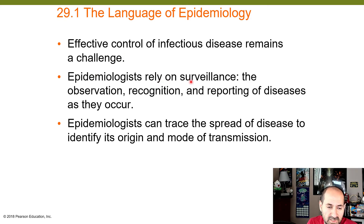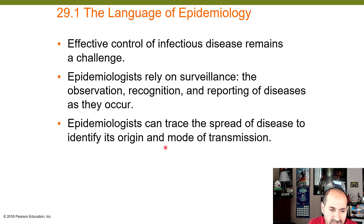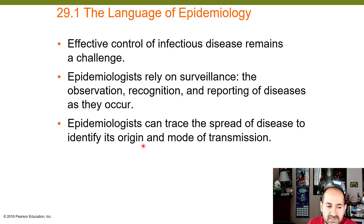Epidemiologists rely on surveillance. What is surveillance? It's the observation, recognition, and reporting of diseases as they occur, so they can try to get out in front of them. Epidemiologists can trace the spread of disease to identify its origin and mode of transmission, which is very important — if you don't know the origin, it's hard to prevent future spread.